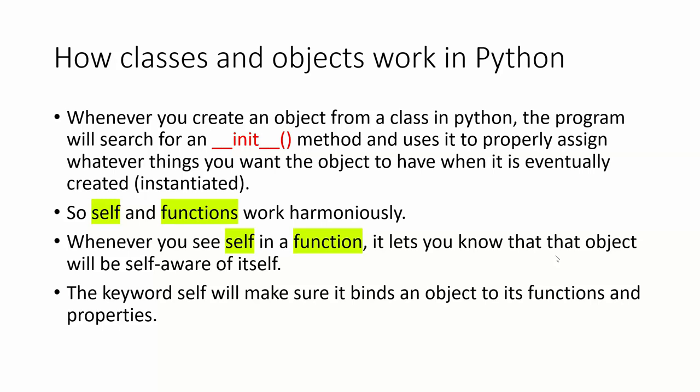This is how classes and objects work in Python — just a brief explanation. When you create an instance from a class in Python, it will look for the init method. Once it finds the init method and sees any objects you've specified in it, it will use that to instantiate the object properly. So the self keyword and your init function work hand in hand. Whenever you see self in a function, it lets you know that the object is aware of itself, and the self keyword will make sure it binds an object to its functions and properties.